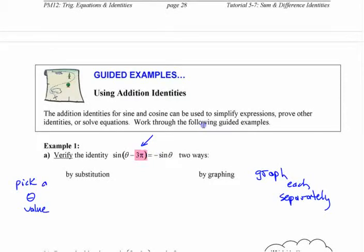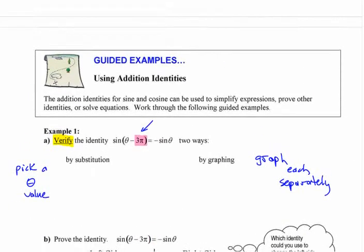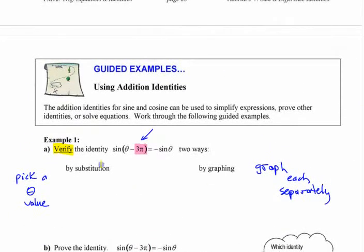For each of these guided examples, this first one — verifying just means checking that it works for one or more values, not proving that it works for all values, which we'll do in a second.